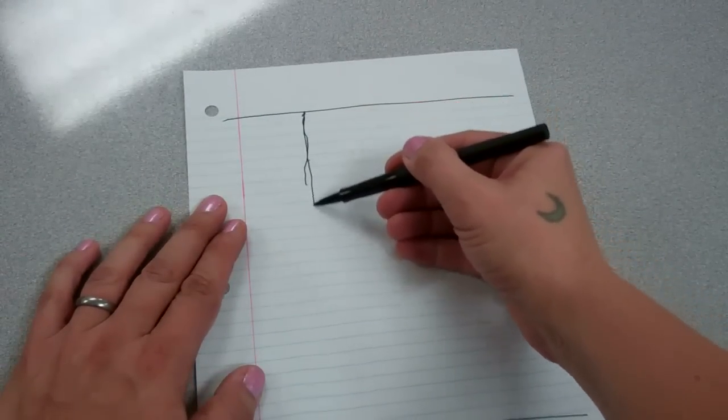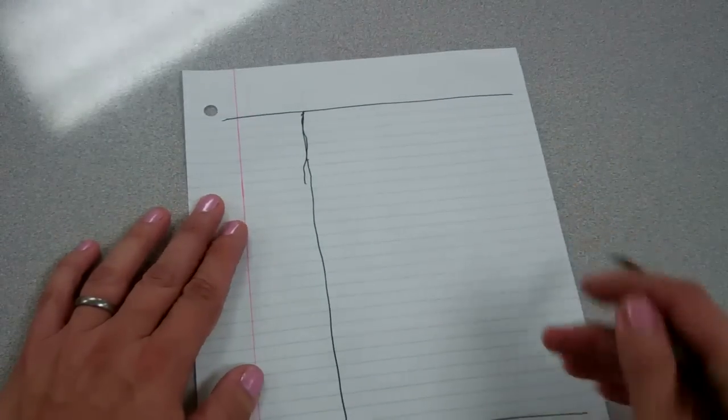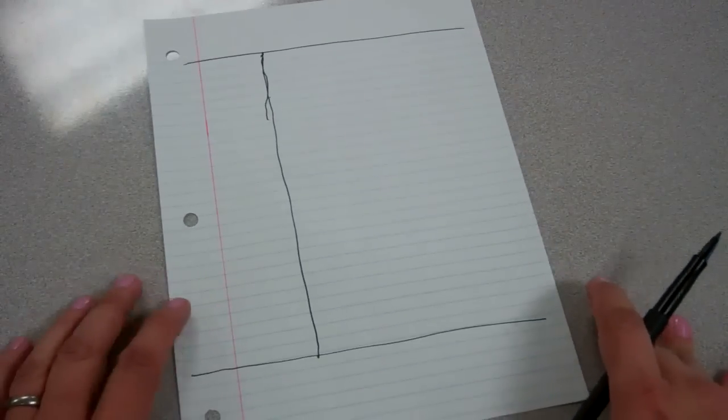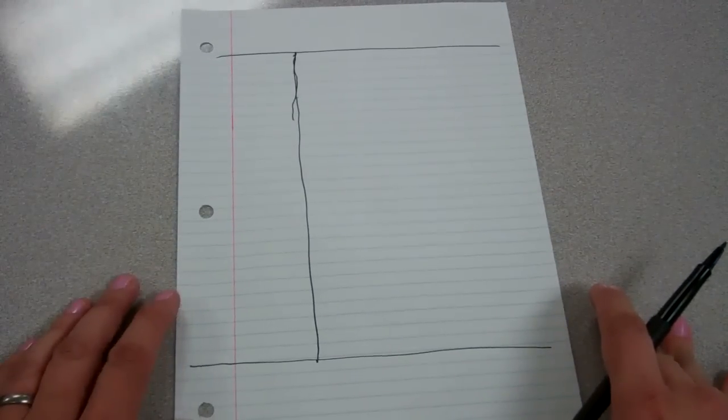Whoops. Don't worry if it's not neat. It's okay if it's a little messy. Don't make it crazy messy, but a little messy is okay. Alright, that's a pretty good division for a Cornell sheet.